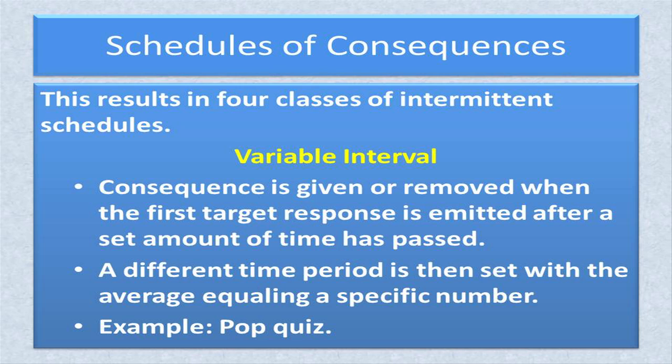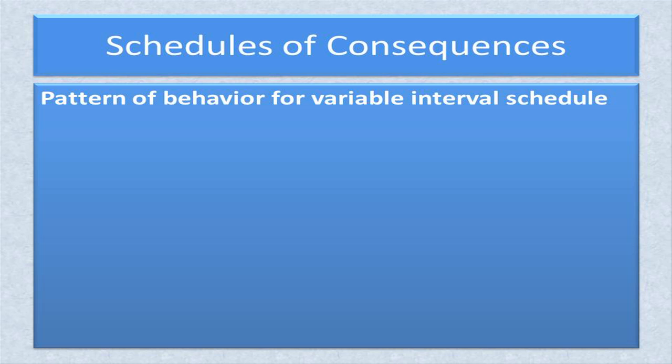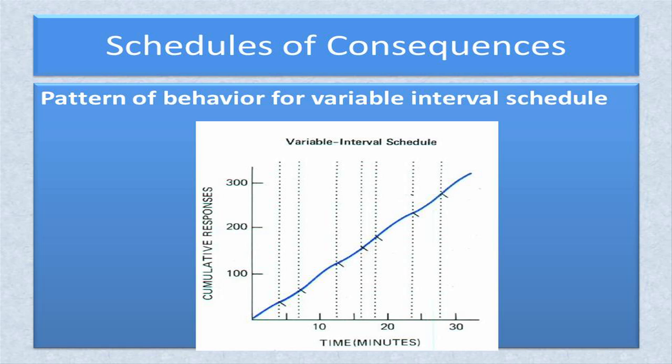An example of the use of this schedule is a pop quiz. A student may know that a quiz will be given once or twice a week, but is not sure exactly which day the quiz will occur. The pattern of behavior for a variable interval schedule shows some variation in the rate of behavior, but does not show the scalloping effect. The rate of behavior increases and decreases a little over time, but does not stop completely or increase dramatically. Notice, however, that the rate of responding is higher in the variable interval schedule than it is in the fixed interval schedule.